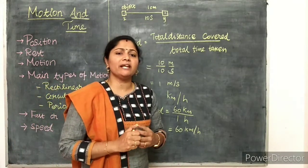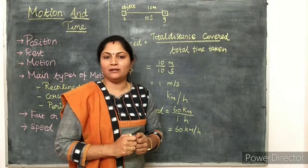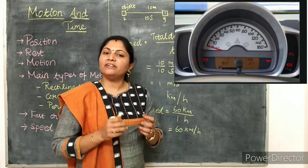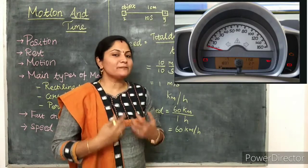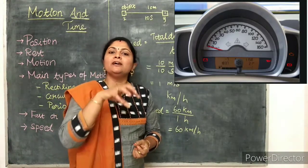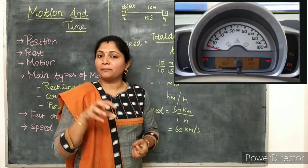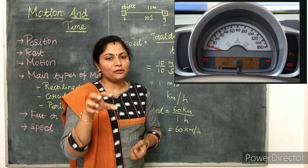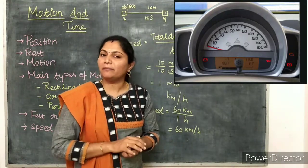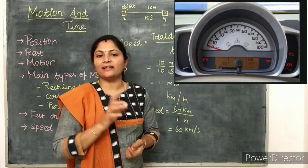To calculate the instantaneous speed of a vehicle, we have a speedometer. The speedometer shows the instantaneous speed of the vehicle. Instantaneous speed means the speed at a particular moment in time.